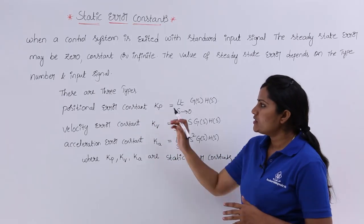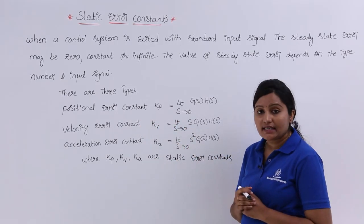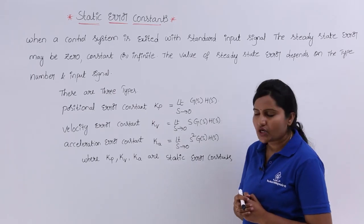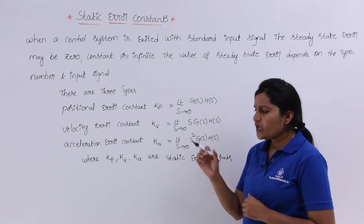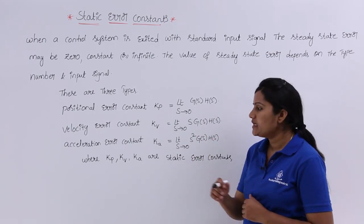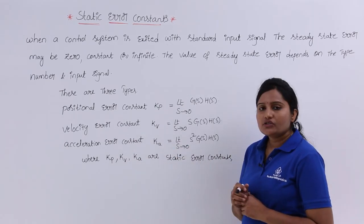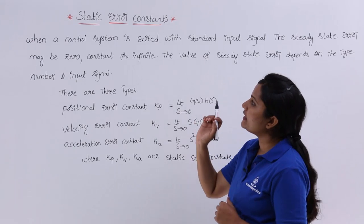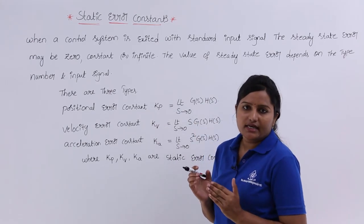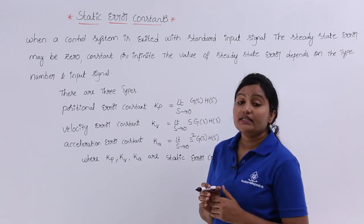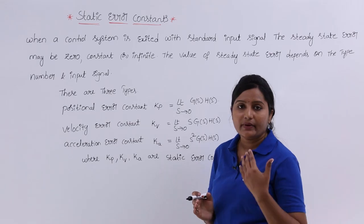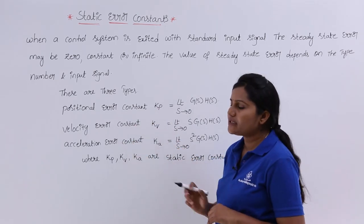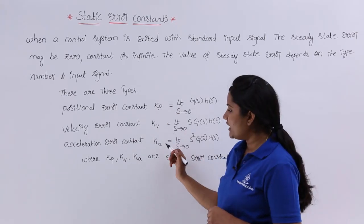The three static error constants are: positional error constant, velocity error constant, and acceleration error constant. These are always represented as Kp, Kv, and Ka respectively.